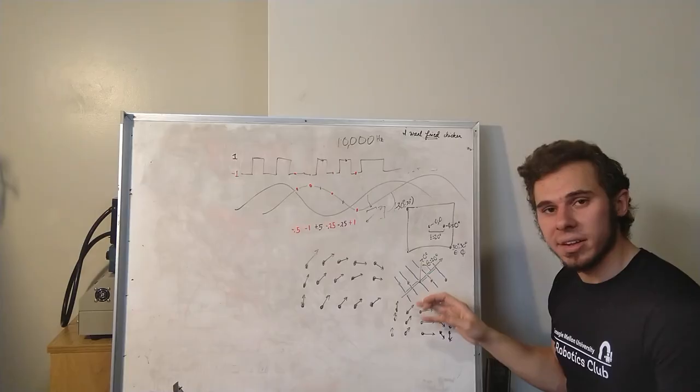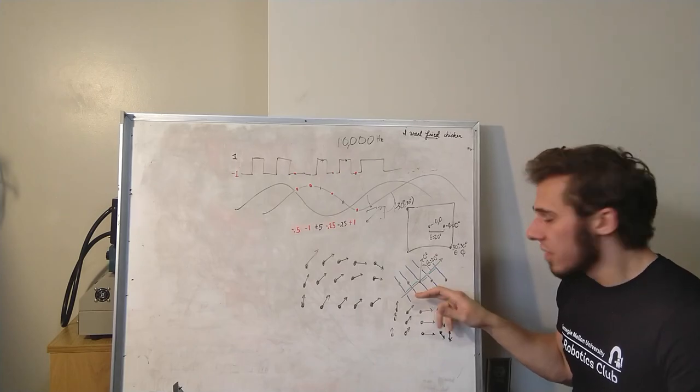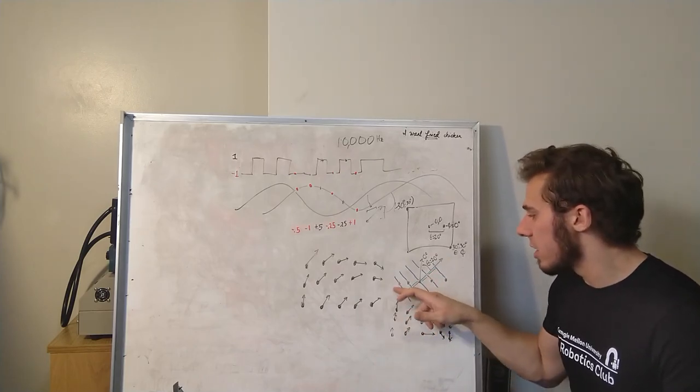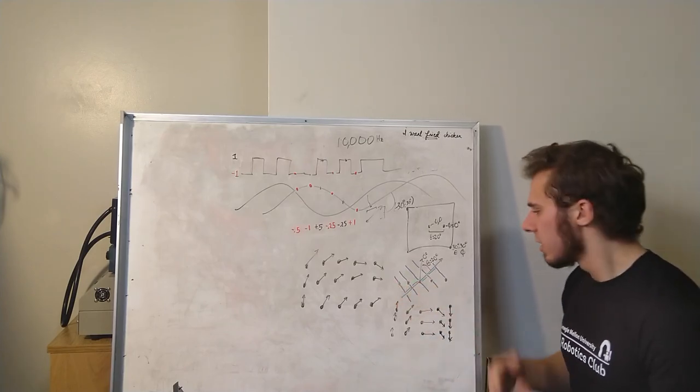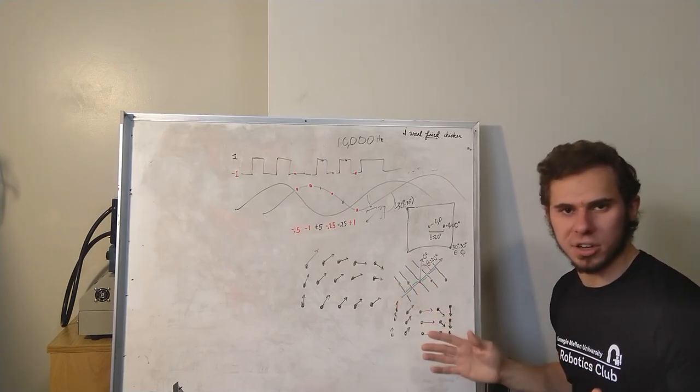And our green lines are the distance that that wavefront has to travel between hitting an individual microphone, one of these black dots, and hitting the center of the array. Now the center of the array is chosen arbitrarily as our zero. That could be anywhere. But we use the center of the array because it's easier.